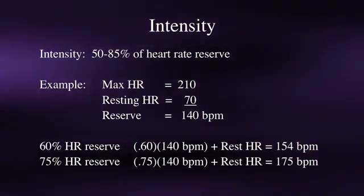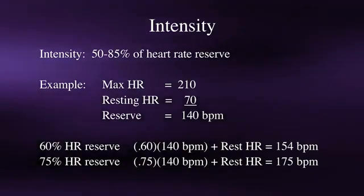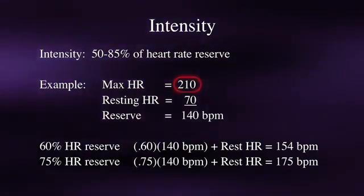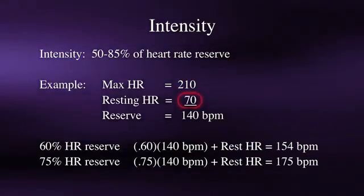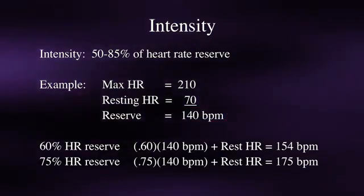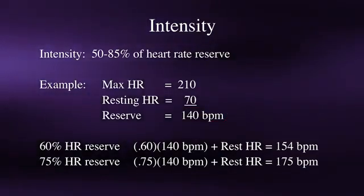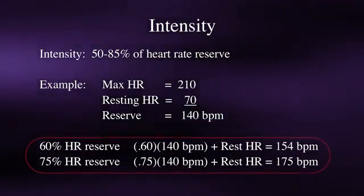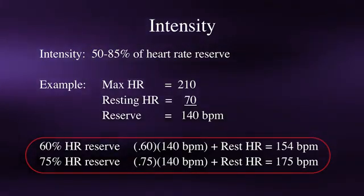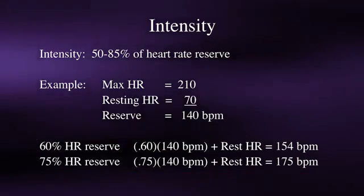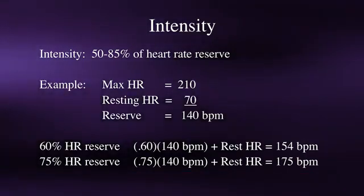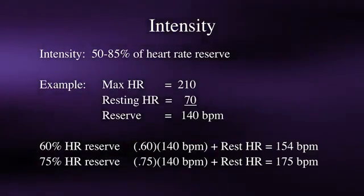Your heart rate reserve can easily be determined by subtracting your resting heart rate from your maximal heart rate. In the example provided here, an individual with a maximum heart rate of 210 beats per minute and a resting heart rate of 70 beats per minute will have a heart rate reserve of 140 beats per minute — this is the range your heart rate can fluctuate above resting levels. If someone wished to have a training target heart rate zone between 60 and 75% of their heart rate reserve, that would translate into a range of 154 to 175 beats per minute. For individuals just starting an exercise program or who have been inactive, it is best to start at the lower suggested heart rate ranges, and as you become more fit, you can increase your target heart rate to higher ranges.